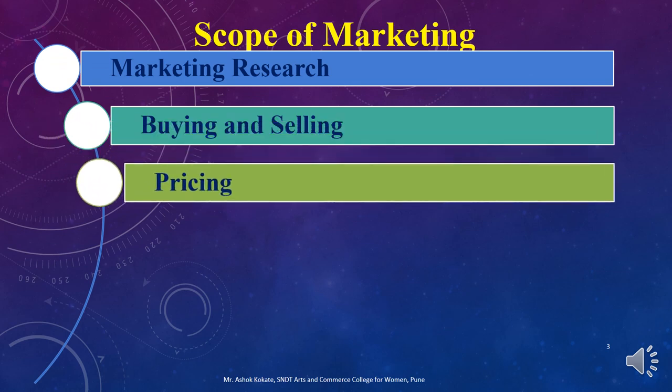The third scope of marketing is pricing. Pricing is the second important 'P' of the marketing mix. After marketing research and buying of raw materials, every organization produces the product, and then it is time to take the decision about pricing — deciding the price of the product. This activity is also a very important part of marketing.